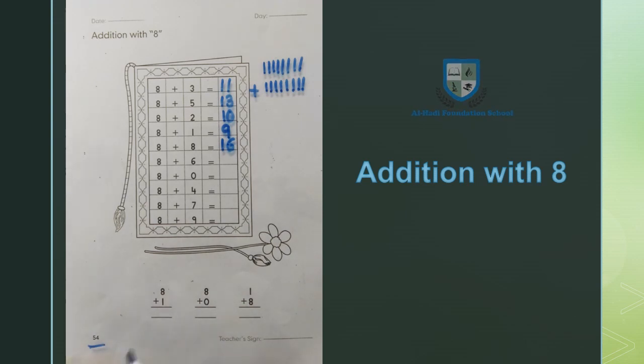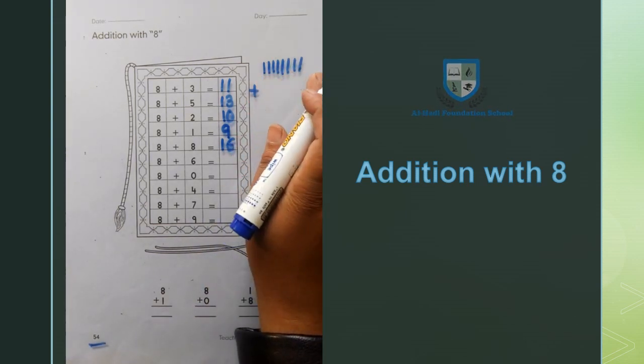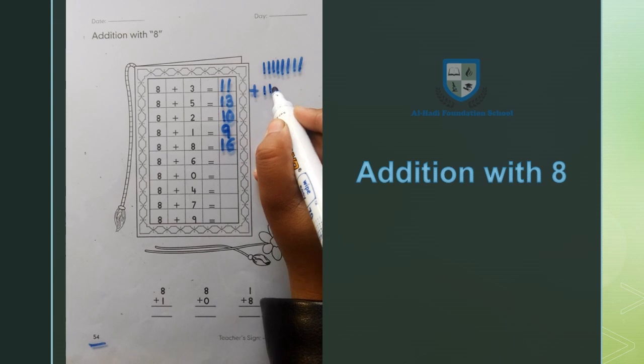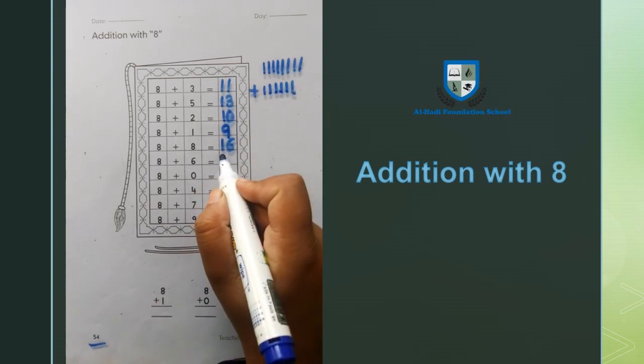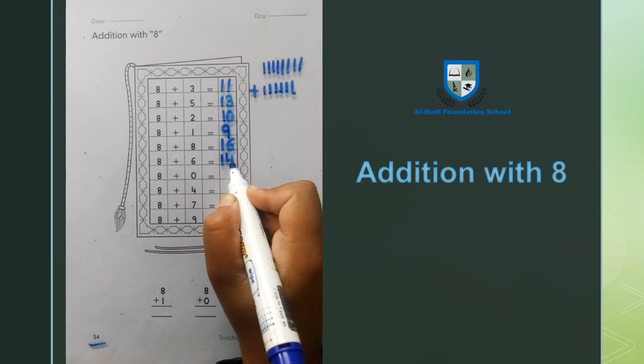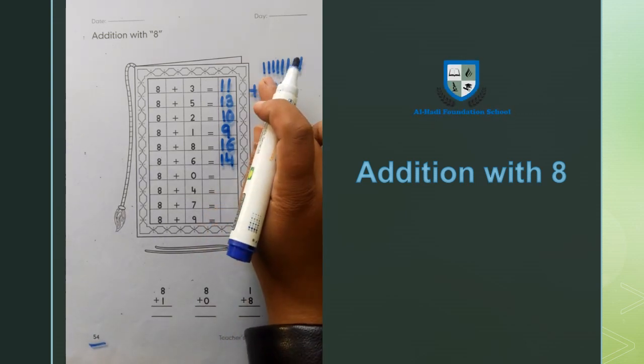Next number is 8 plus 6. Now we will add 6 lines. 1, 2, 3, 4, 5, 6. 8, 9, 10, 11, 12, 13, 14. 8 plus 6 equals 14. Next, 8 plus 0.